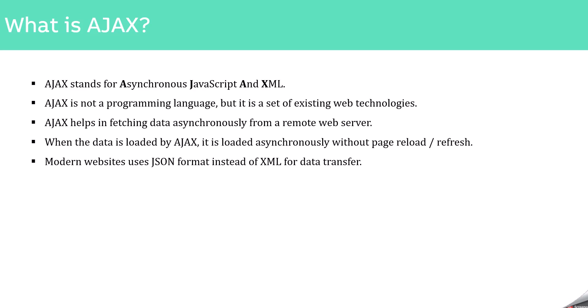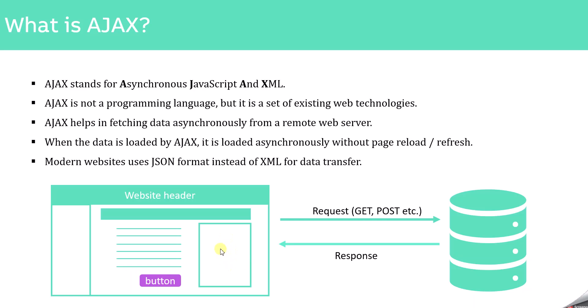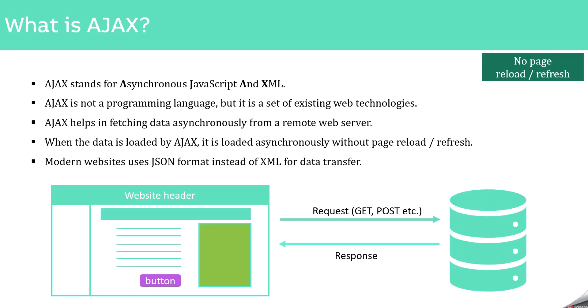The data received from the server is loaded dynamically into our web page without reloading the complete web page. For example, we have a web page and a server. When we click a button, a request is sent to the server. The server sends back the data, which is then loaded dynamically into a specific part of the web page without reloading the entire page. This is the main use of AJAX.